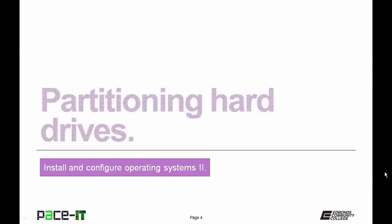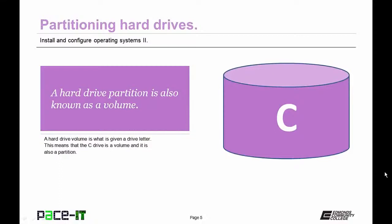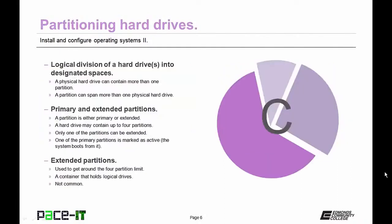We begin by talking about partitioning hard drives. A hard drive partition is also known as a volume. A hard drive volume is what is given the drive letter — so the C drive, the main drive, is a volume and it is a partition.